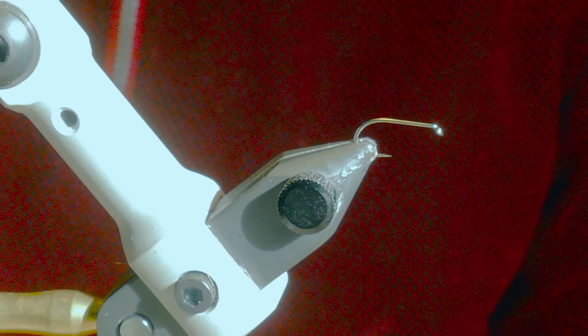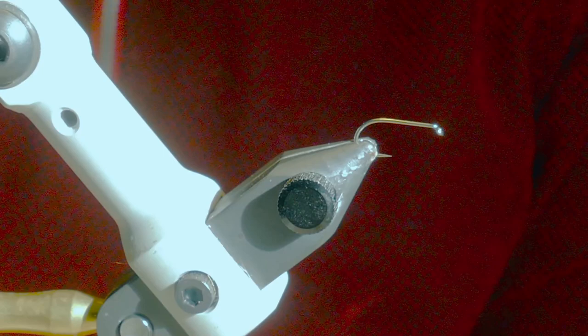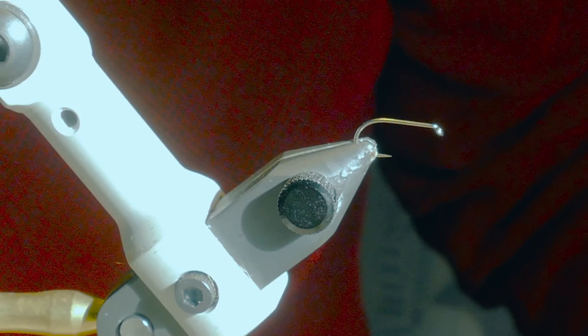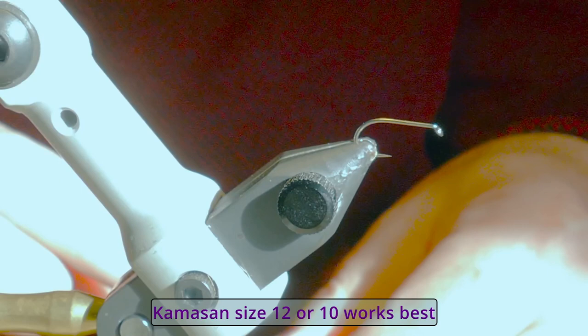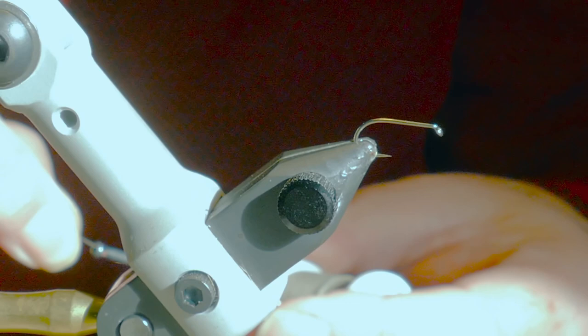Hello again. In the vise I've got a size 12 Camasan 405 hook microbarb and I'm going to tie a simple sedge that I've used off and on for 30 years and it's worked well on both rivers and locks.